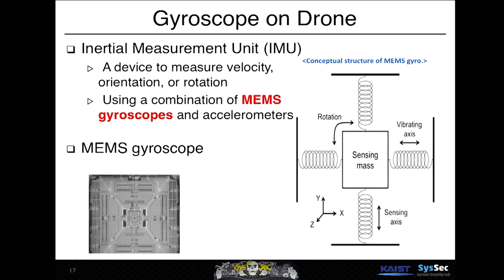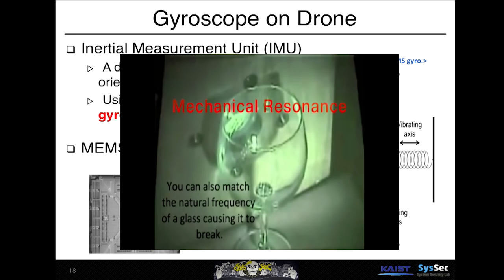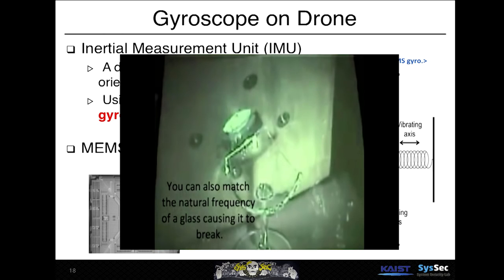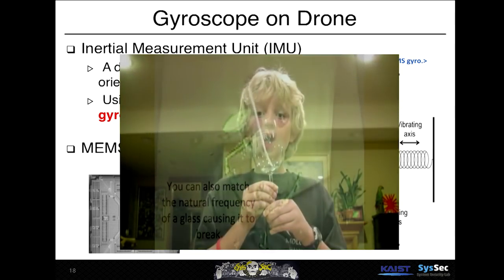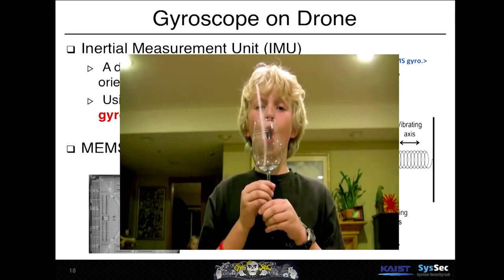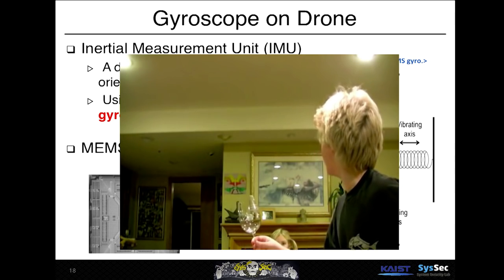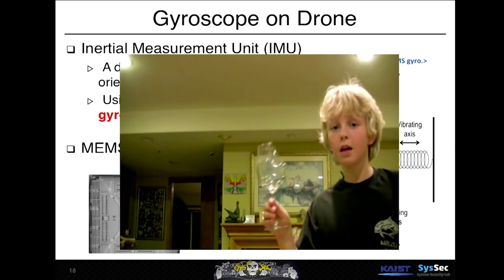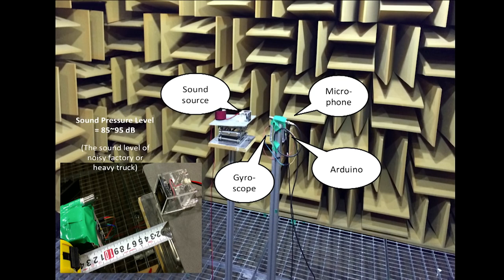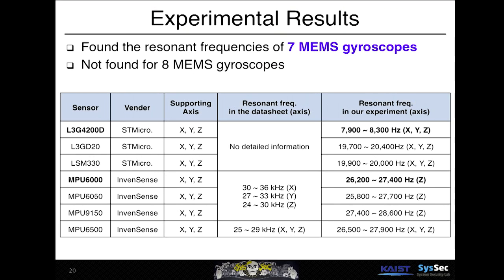It is well known that mechanical structures have a resonant frequency. For input at a specific frequency, the mechanical structure can resonate. We decided to measure resonant frequencies in an anechoic chamber. We checked a total of 15 MEMS gyroscopes, and found a resonant frequency in 7 of them.